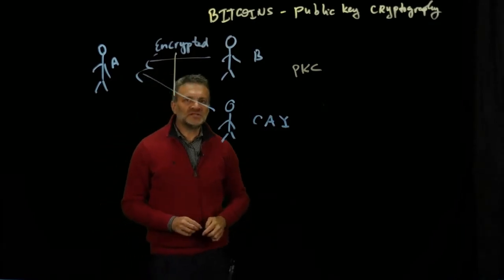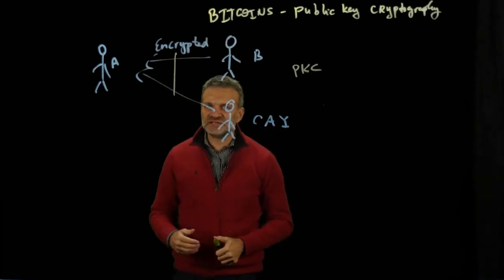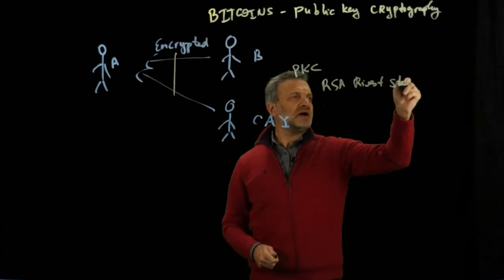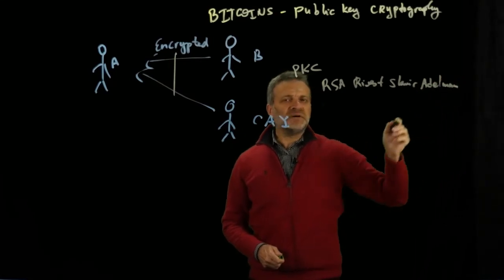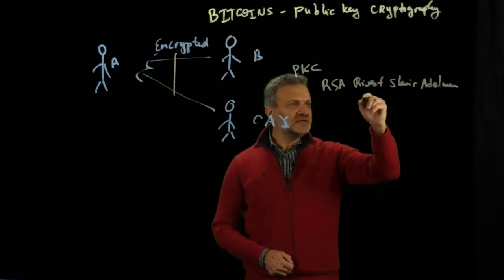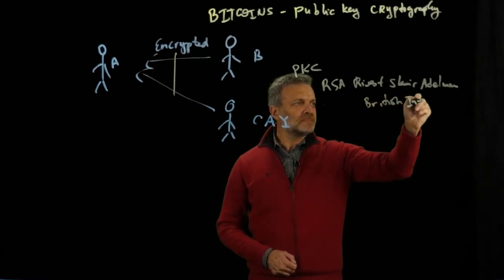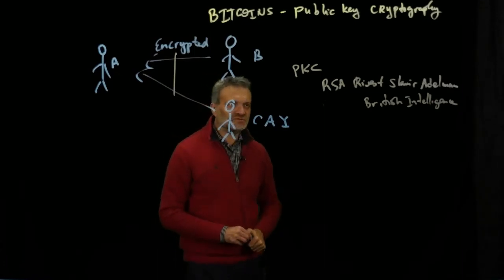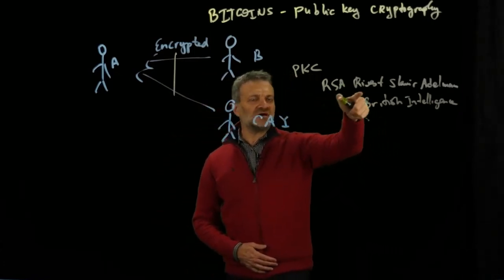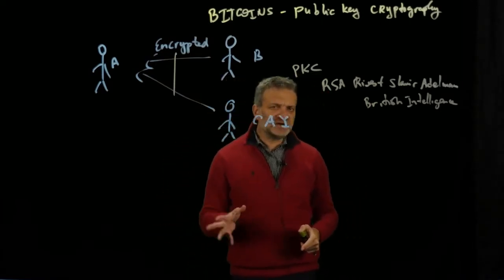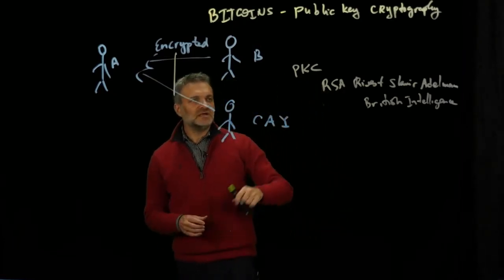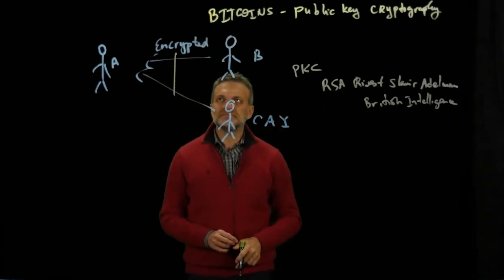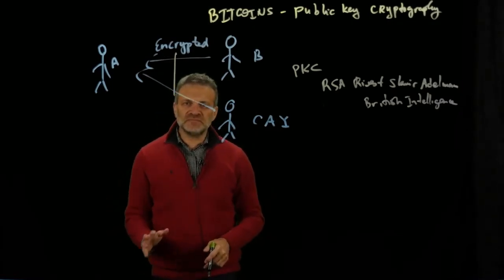This is a revolutionary concept invented in the 70s by RSA — Rivest, Shamir, Adleman. But apparently it was invented earlier by people in British intelligence, and it was only declassified in the 2000s. We then discovered that this RSA algorithm was actually invented in British or American intelligence — the NSA equivalent in the UK — about 20 years before RSA, already in the 1950s.